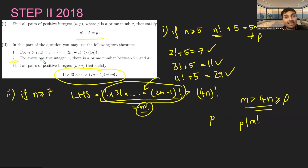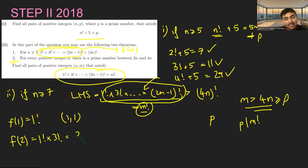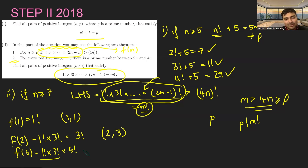So there are no solutions where n is at least 7, which means I just need to check n = 1, 2, 3, 4, 5, 6 manually. Let me call the left hand side f(n). f(1) is just 1 factorial, which is obviously a factorial — so (1, 1) works. f(2) is 1 factorial times 3 factorial, which is 6, which is 3 factorial — so (2, 3) is also a solution. f(3) is 1 factorial times 3 factorial times 5 factorial. That's 6 times 5 factorial, which is 6 factorial — so (3, 6) is also a solution.